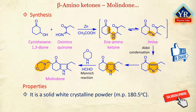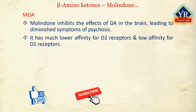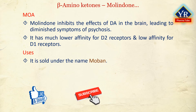Molindone is a solid white crystalline powder with a melting point of 180.5 degrees centigrade. It is freely soluble in water and alcohol. Molindone works by blocking the effects of dopamine in the reticular limbic systems of the brain, leading to diminished symptoms of psychosis. This decreased dopamine activity results in decreased physiological effects normally induced by excessive dopamine stimulation. It has a much lower affinity for D2 receptors than most antipsychotic agents and a relatively low affinity for D1 receptors. It has only low to moderate affinity for cholinergic and alpha-adrenergic receptors.